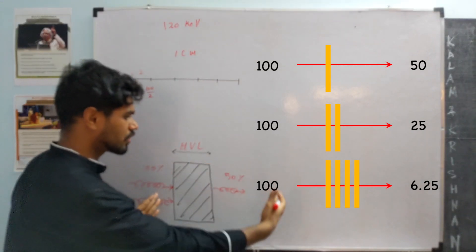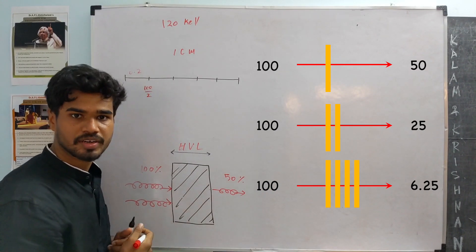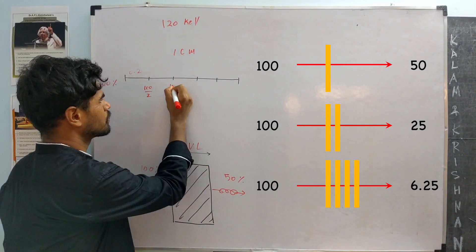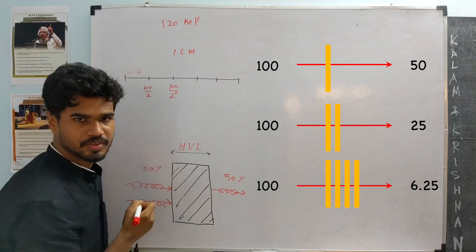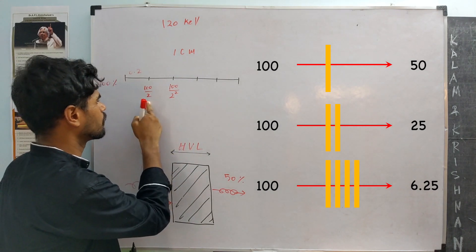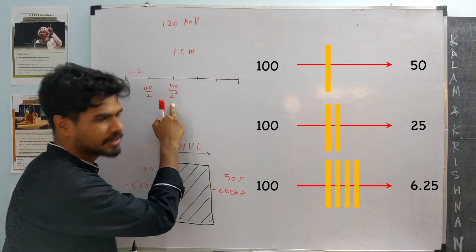If the photons enter two half-value layers, how much will be left? Total percent entering by 2 power 2. There is a drop of half here, that half becomes quarter here.